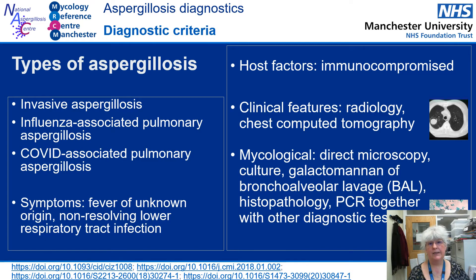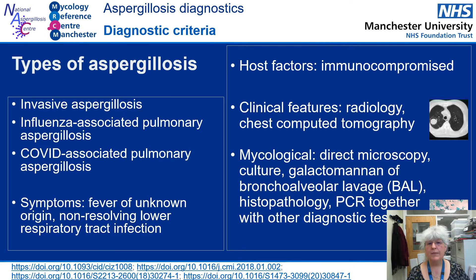Aspergillosis is difficult to diagnose. There are broadly three types of conditions: invasive aspergillosis, chronic pulmonary aspergillosis, and allergic bronchopulmonary aspergillosis. Sometimes one type can develop into another, such as the allergic condition worsening to become chronic aspergillosis. The symptoms can be nonspecific and broadly mimic a number of other serious infections or cancer. Therefore, it's essential to have defined indicators to diagnose and treat aspergillosis correctly.